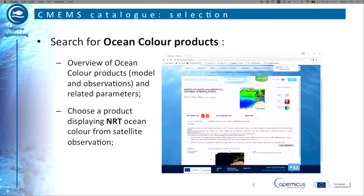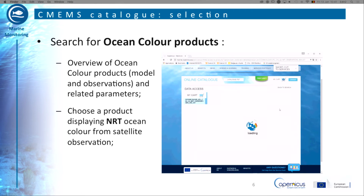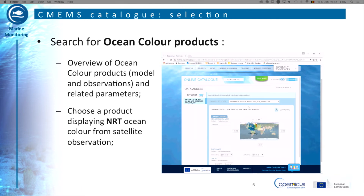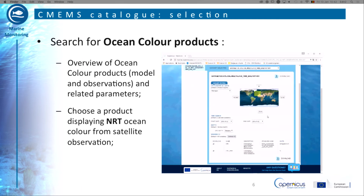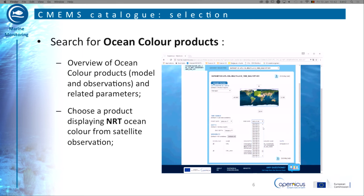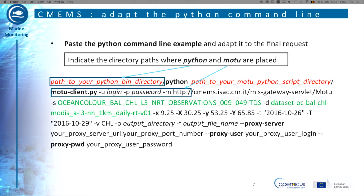Then you can either download manually by clicking on the right Download button indicating the size of the file, or look for a script that will give you the possibility to automatically download files. Choose the dataset and click on the button View Script. To execute this command line, you have to copy and paste it in your editor window and proceed to modifications. In the coming slides, you will see how to complete the command line we copied and pasted.